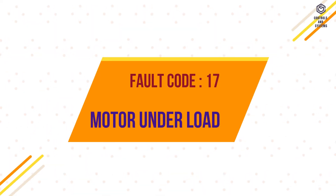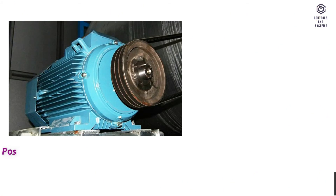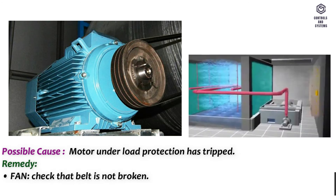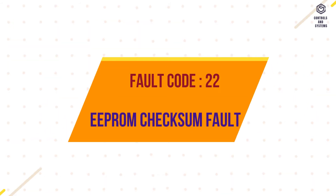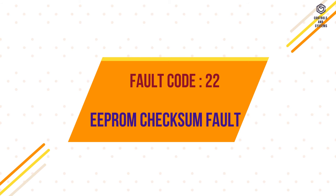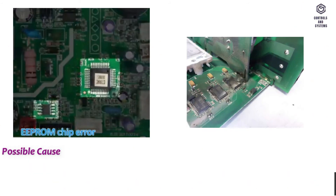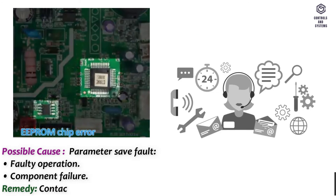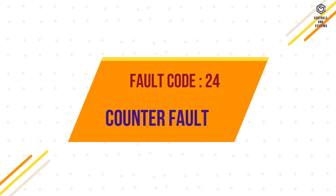Fault code 17 – Motor under load. Possible cause: motor under load protection has tripped. Remedy: for a fan, check that the belt is not broken; for a pump, check that the pump is not dry. Fault code 22 – APROM check fault. Possible cause: parameter save fault, faulty operation, or component failure. Remedy: contact technical support.